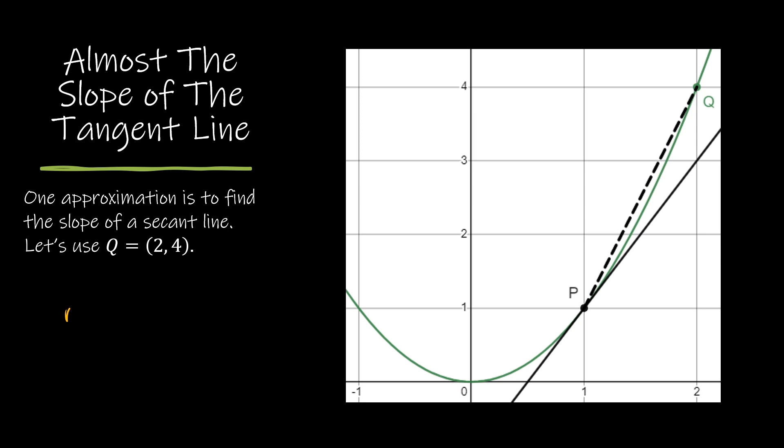I'm going to find the slope of this line using the formula for slope. We're going to use two four, and the point P, which is one one. To find the slope, I'm going to take the change in y over the change in x. So that's three over one, which is a slope of three. So a decent approximation of the slope of this line is three.